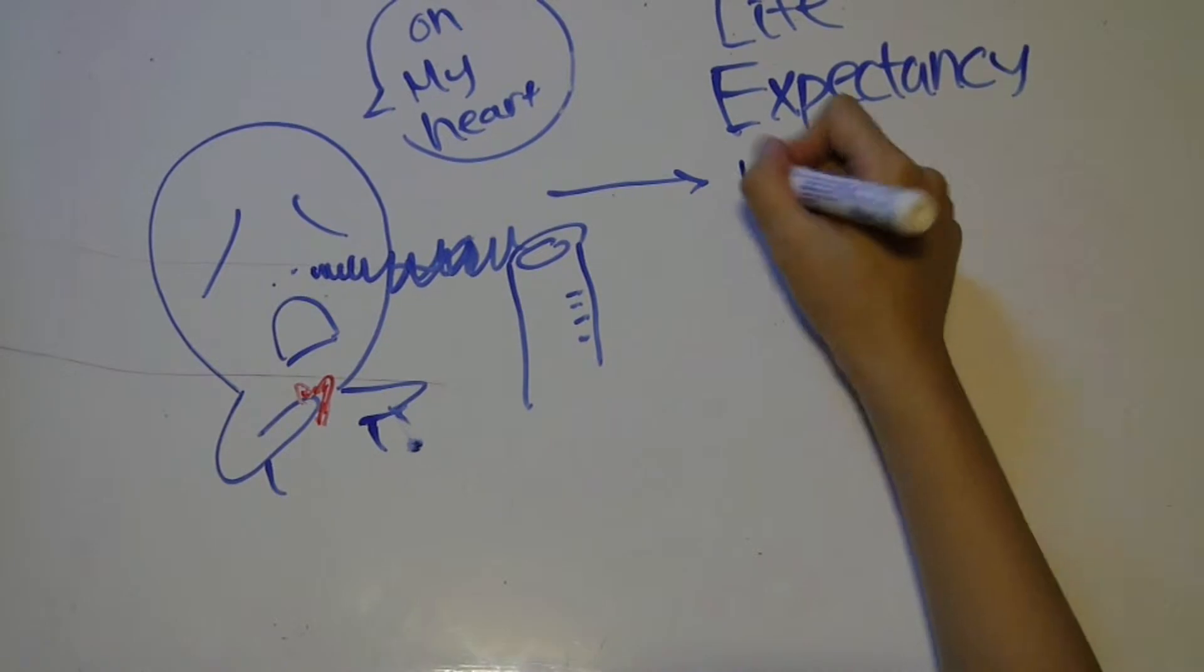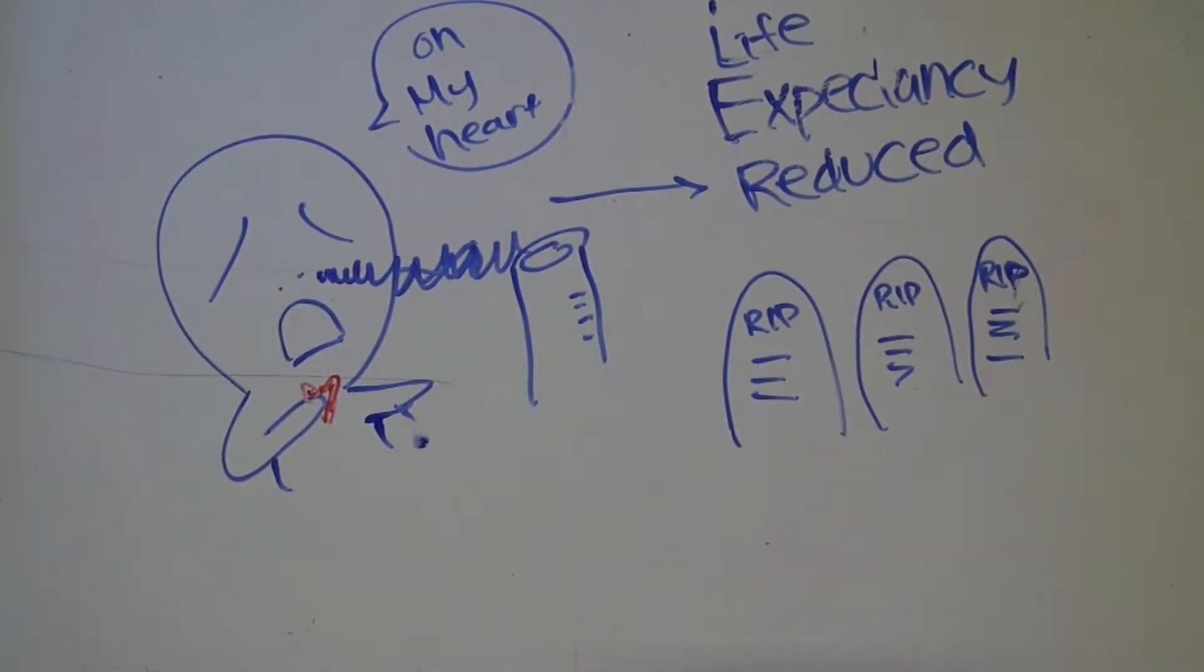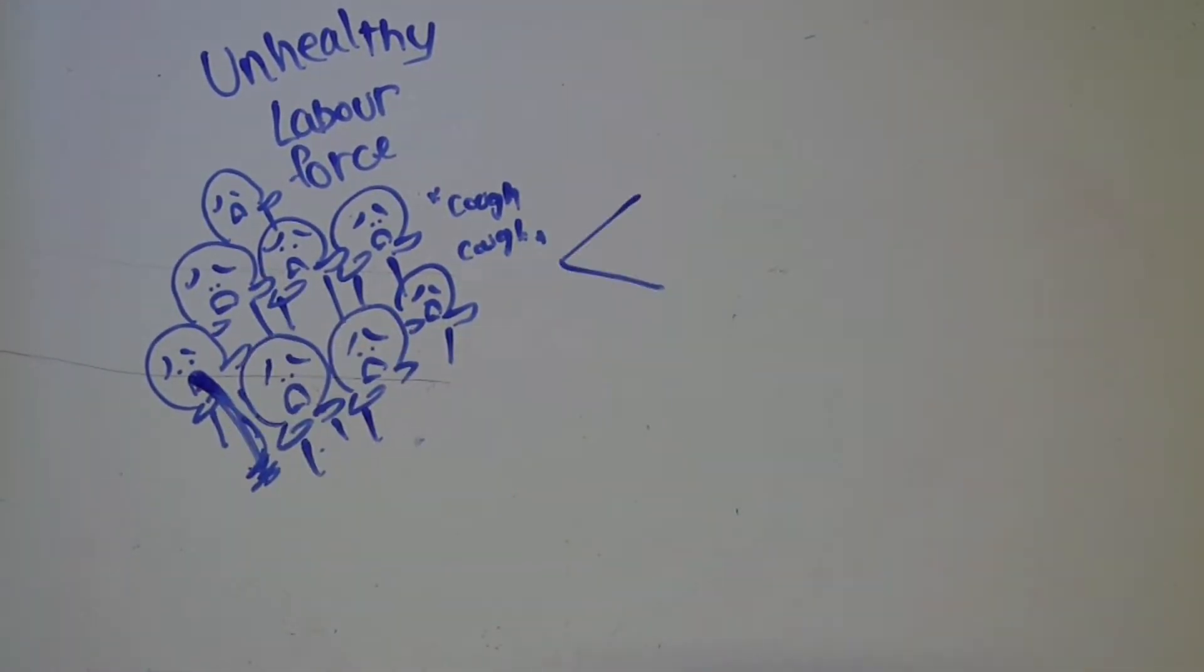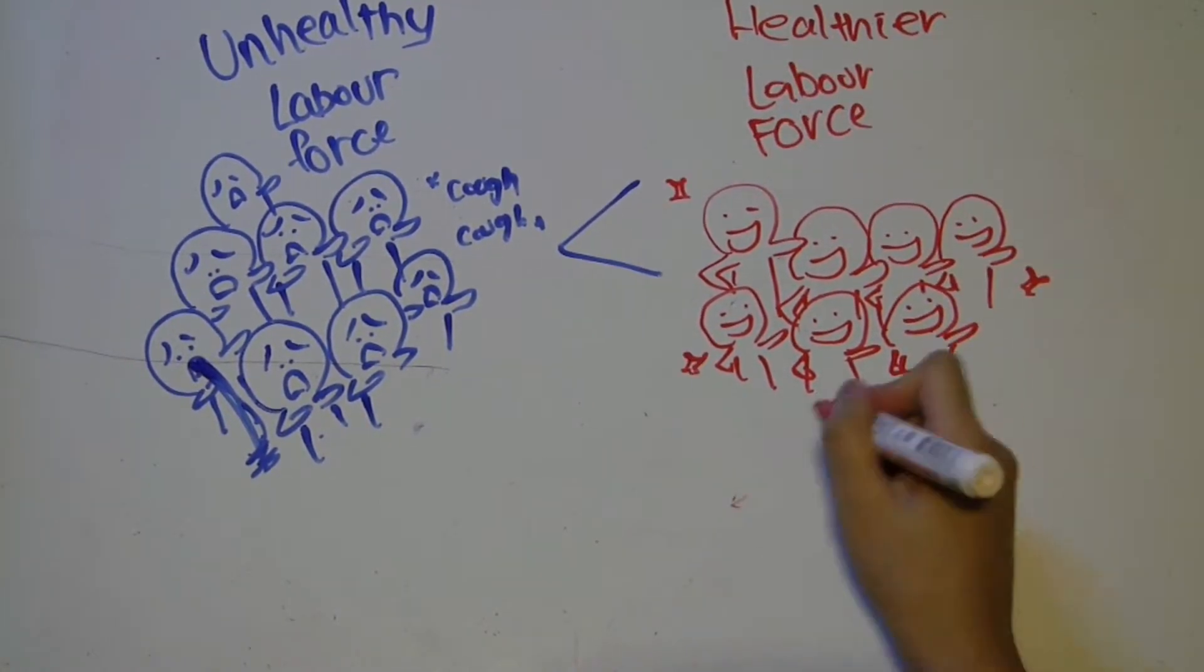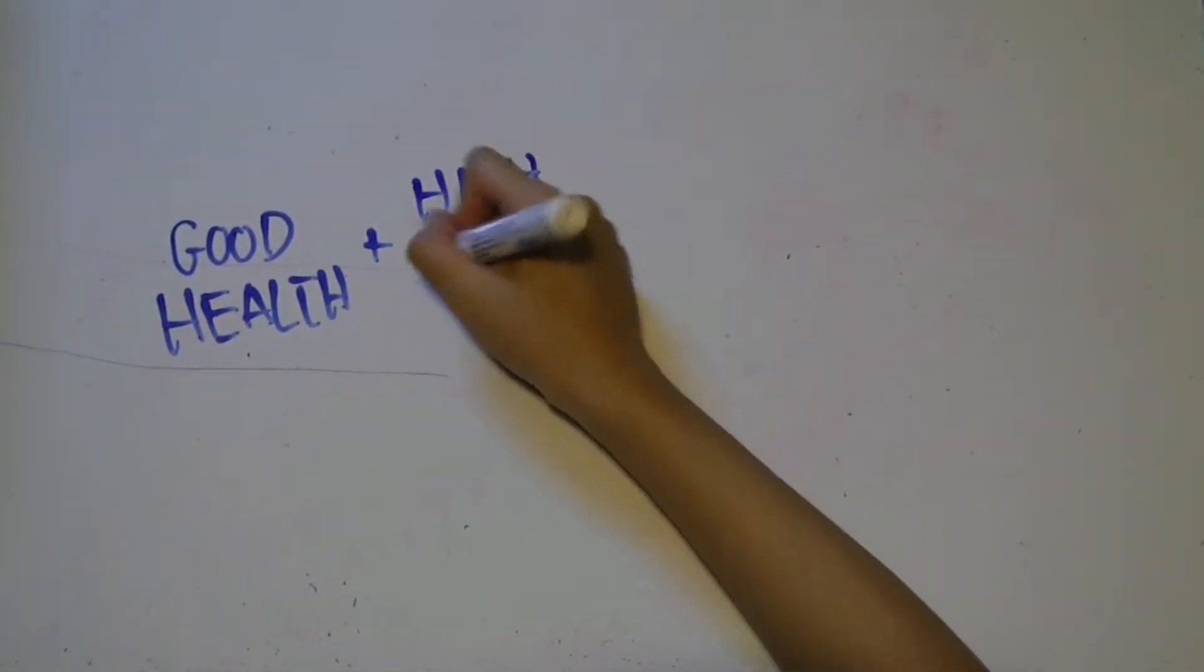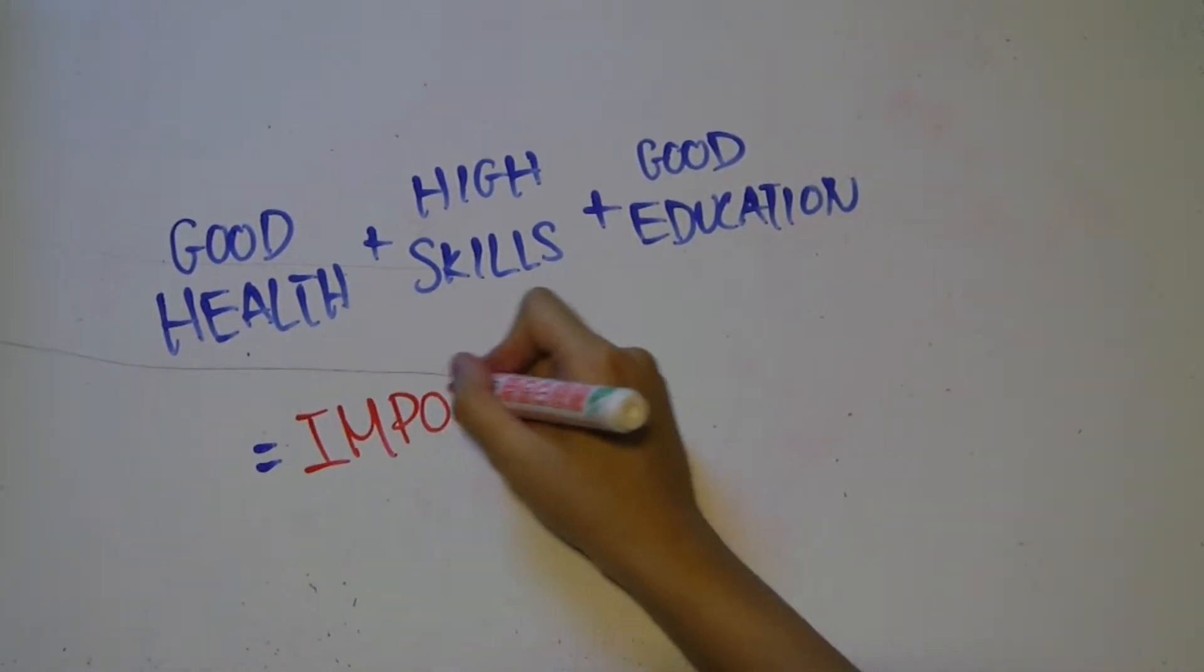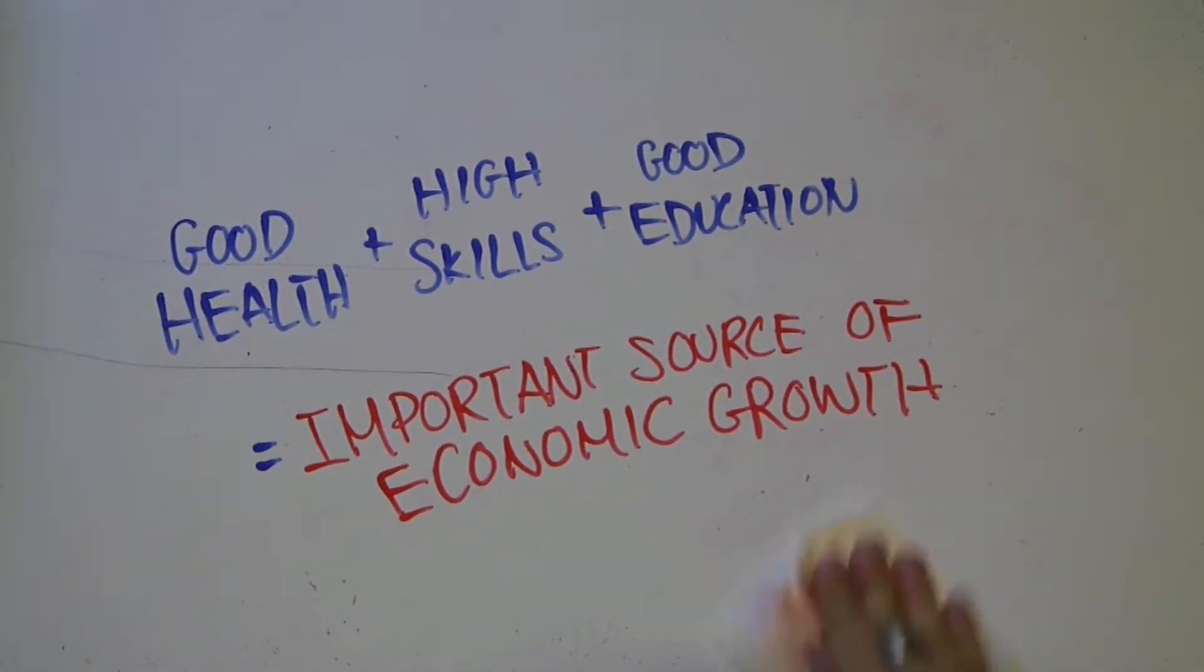If a country has a labor force full of unhealthy workers, the productivity of the country will be lower than with a healthy labor force, because a healthy labor force can generally produce more output than an unhealthy labor force. Therefore it is very important to maintain good air quality, because having a labor force with good health combined with high skills and good education is among the most important sources of economic growth.